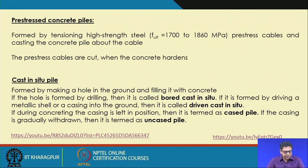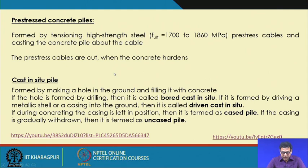So the three types are: precast, pre-stressed, and cast-in-situ. Cast-in-situ piles are constructed or installed on site itself. These piles are formed by making a hole in the ground and filling it with concrete.